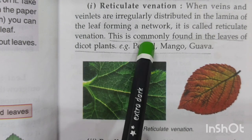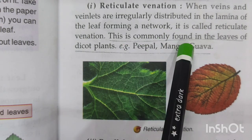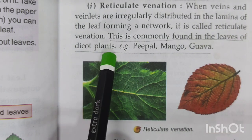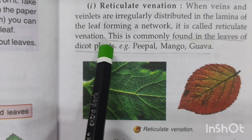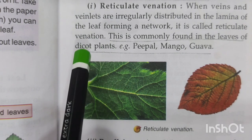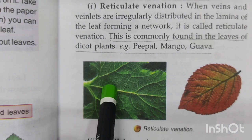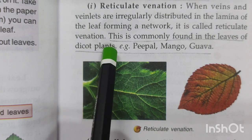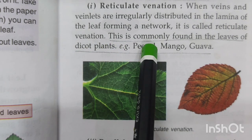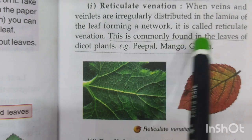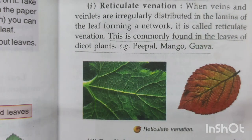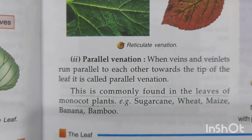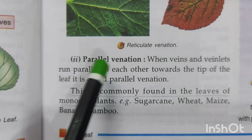A network — a net-like structure — can be seen in reticulate venation. This is commonly found in the leaves of dicot plants. Plants are of two types: dicot and monocot. These leaves showing reticulate venation are found in dicot plants. If you look at leaves of peepal, mango, or guava you'll be able to see the reticulate venation very clearly.